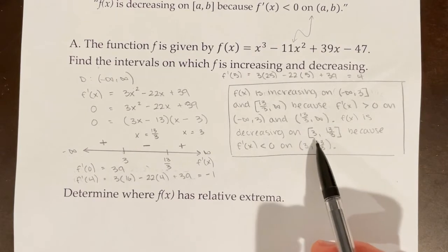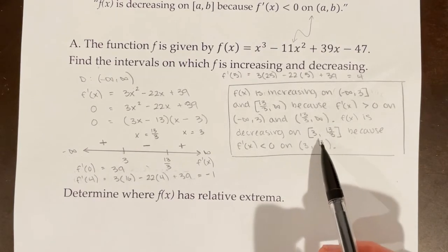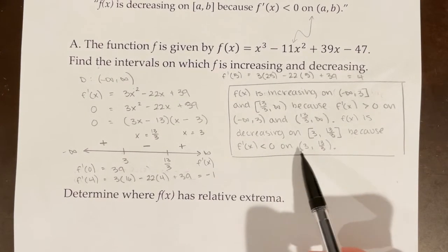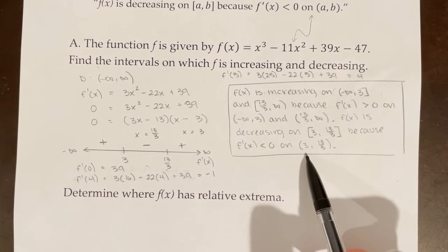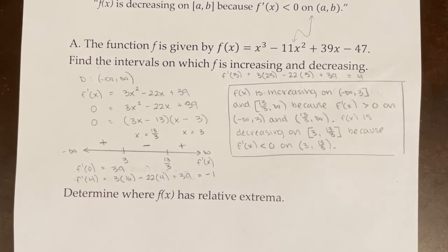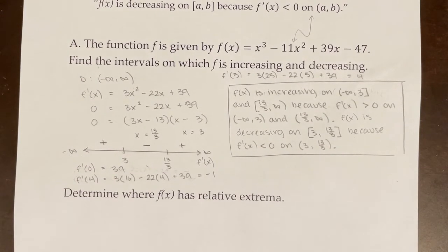f of x is decreasing on the closed interval from 3 to 13 thirds because f prime of x is less than 0 on the open interval from 3 to 13 thirds. And that's how you would do a proper justification.